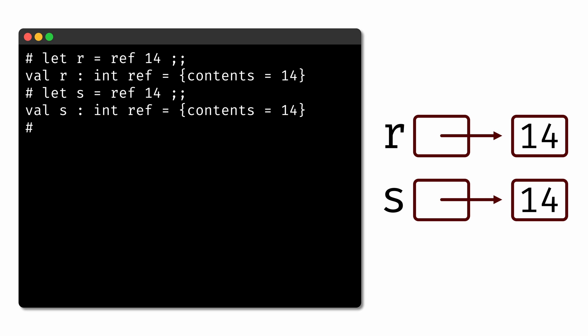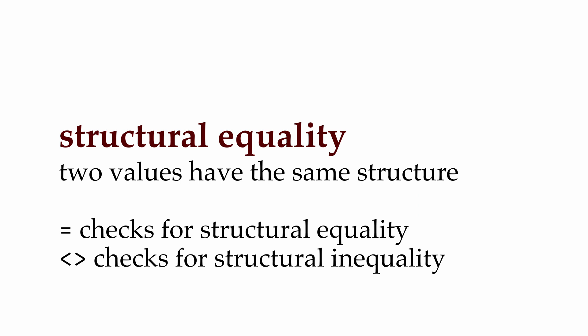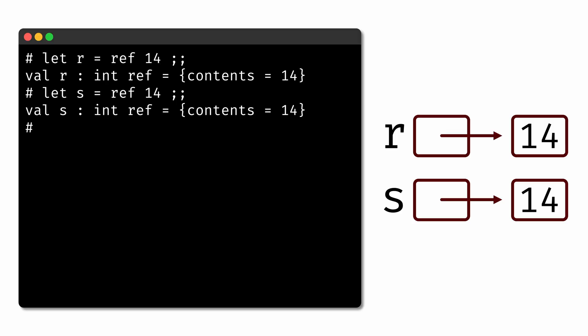So would we say that r and s are equal to each other? It depends on what we mean by equality. They're equal in the sense that both r and s are references to locations in memory that store the value 14, but they're not equal in the sense that they don't physically refer to the same location in memory. OCaml gives us operators for both notions of equality. With the single equal sign, we can check for structural equality — do the two values have the same structure, regardless of whether they're actually the same memory locations. In the case of r and s, they're structurally equal.